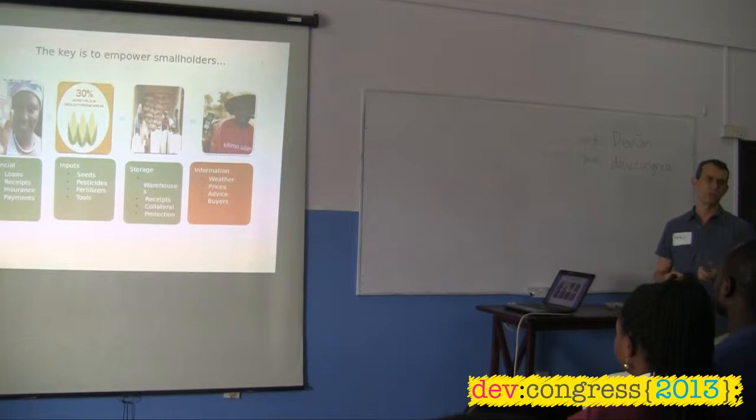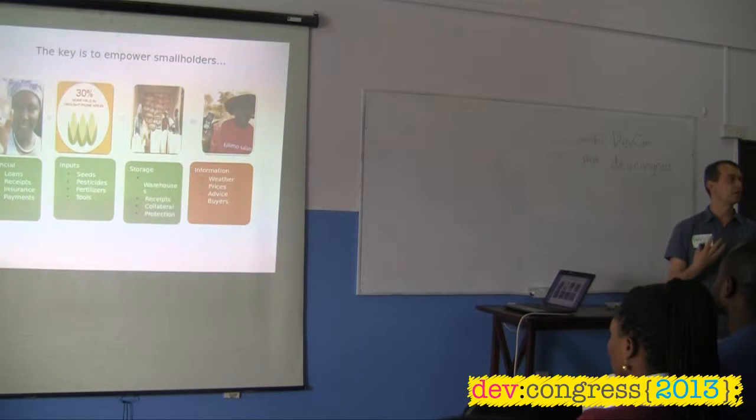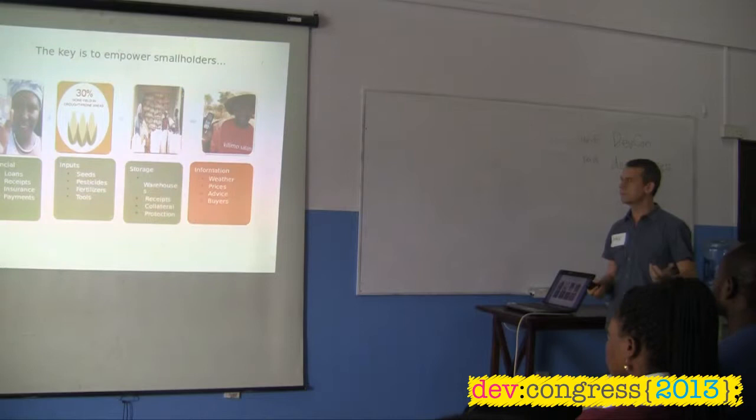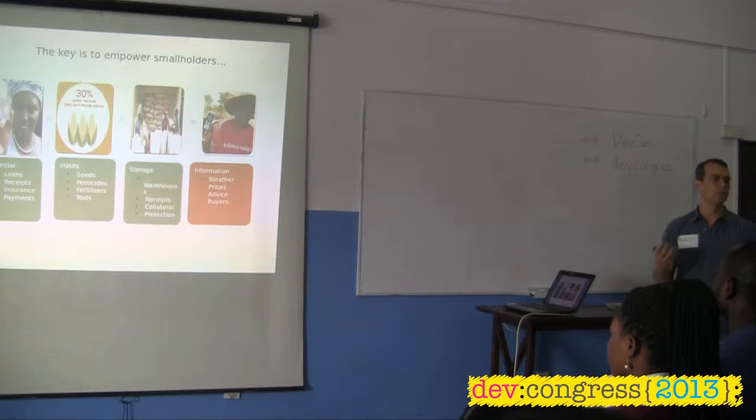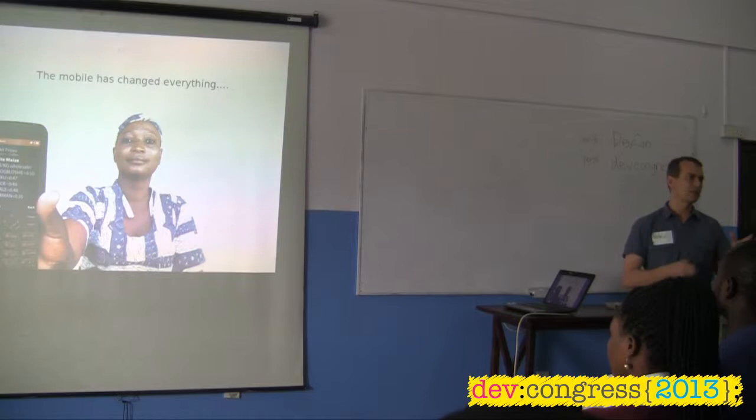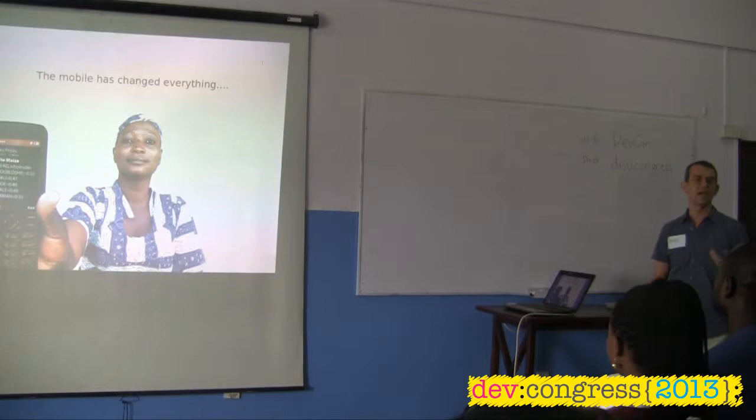Most of the African agriculture context is about smallholders — about 90% of agriculture in Ghana is smallholders. There are probably about four ways to intervene with smallholders to increase their production: you can provide them with loans, you can provide them with inputs, you can help them with storage around warehouses and roads. But from our perspective, you can empower them with information. And over the last five years, mobile has changed everything. So what are the kinds of technologies emerging in agriculture that you should know about?